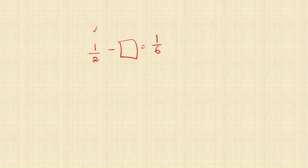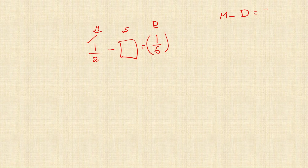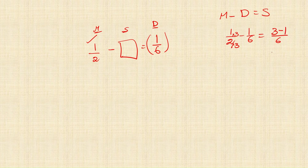Check another question: 1 upon 2 minus unknown equals 1 upon 6. Here the minuend is the greatest value. To find the subtrahend, do minuend minus difference: 1 upon 2 minus 1 upon 6. LCM for 2 and 6 is 6. Multiply the first fraction by 3: 1 into 3 is 3, minus 1 gives 2 upon 6. Simplifying gives 1 upon 3. The unknown is 1 upon 3.